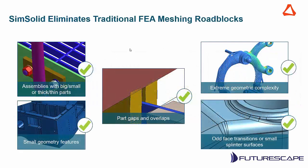Traditional FEA meshing can present challenges with thin-walled parts, small geometry features, part gaps or overlaps that cause meshes to crash, and weird geometry like small splinter faces. SimSolid handles these automatically. For more complex parts — which is where robotics is moving toward with 3D printing — you can really increase geometry complexity, such as lattice structures, which are quite light, and SimSolid is able to analyze very small geometry.